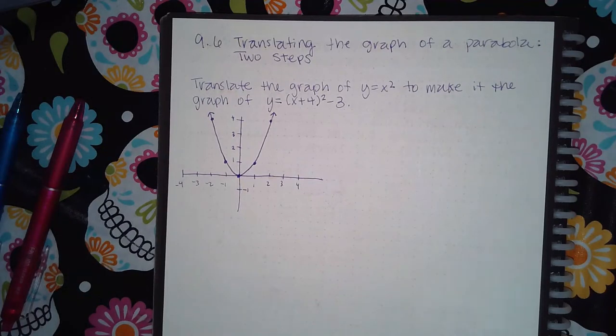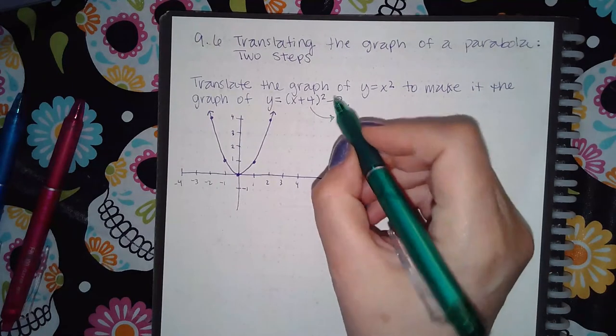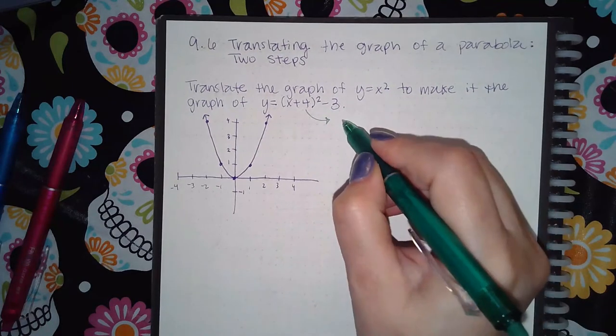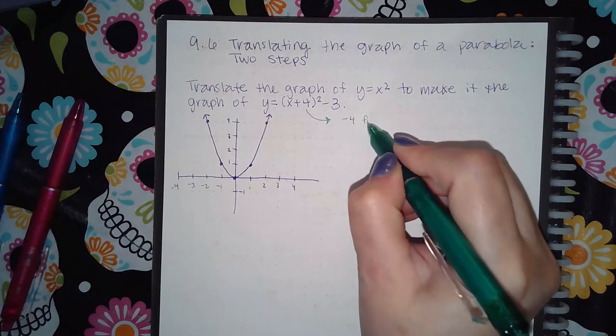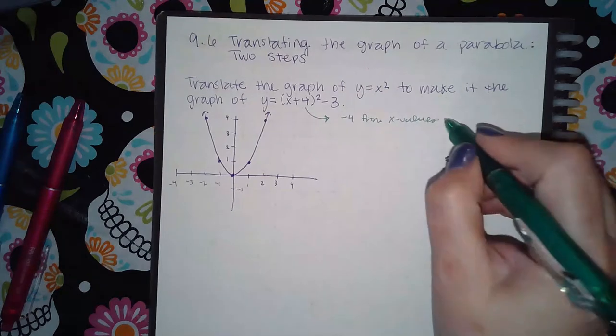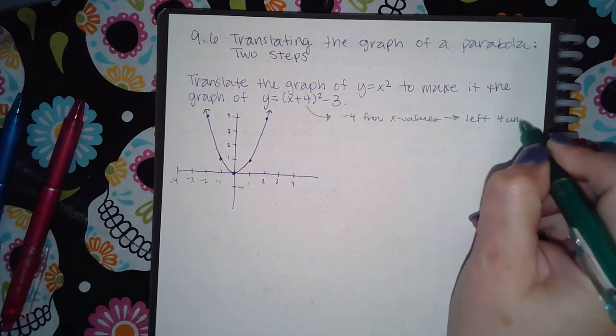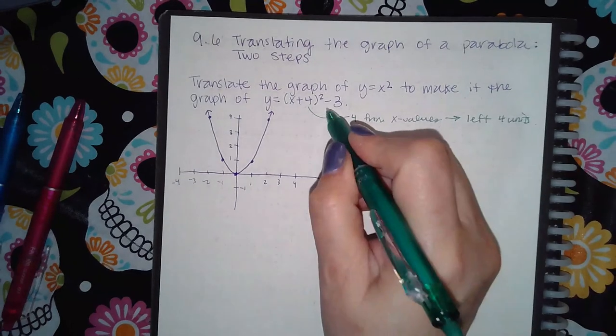Here we have 9.6 translating the graph of a parabola, so now we have multiple translations that are happening. We have plus 4, which means I need to do the opposite, which is minus 4 from x values, which is going to make it go to the left 4 units.